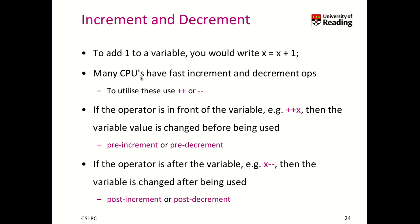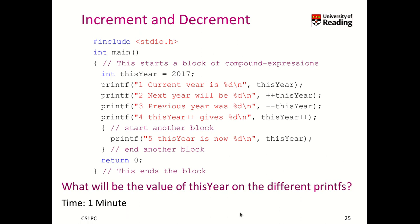Many CPUs have faster increment and decrement operators, so you use plus plus or minus minus, and we can distinguish depending on the position relative to a variable what it does. So if we have plus plus x, this is the so-called pre-increment operator — the variable value is changed before it is used. If you have the operator after the variable, like x minus minus, it's the post-decrement operator, meaning the variable is first used and then changed. That makes a huge difference.